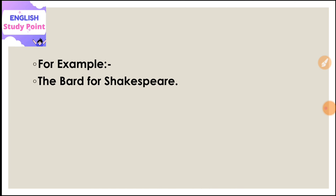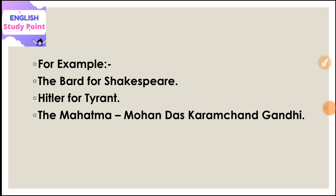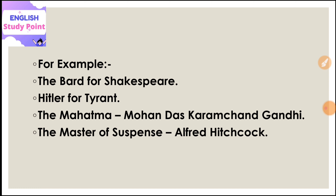For example, जैसे हम Shakespeare को refer करते हैं तो 'Bard of Avon' का use करते हैं। Hitler को किसी tyrant personality के लिए refer करते हैं। 'The master of suspense' इस phrase को हम Alfred Hitchcock के लिए refer करते हैं — यह उनकी qualities हैं जो उनकी personality से fit बैठती हैं, इसीलिए उन्हें इस phrase से refer करते हैं। इसमें हम proper names का use नहीं करते। With this, this particular video lecture ends here. Hope this video lecture will help you in your UGC Net English Literature exams.